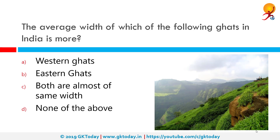The average width of which of the following Ghats in India is more? If you remember from marking on the maps when you were in school, the correct answer would be Eastern Ghats. Eastern Ghats always covered more area on the map than the Western Ghats in respect to width. Western Ghats average width is 50 to 80 km but Eastern Ghats width varies from 100 to 200 km.